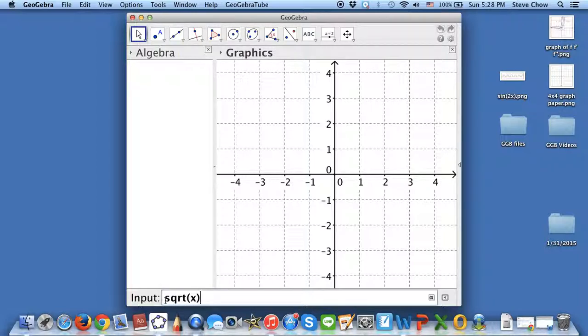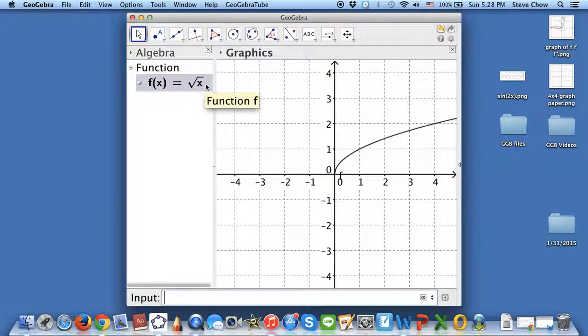And notice that I didn't write down f of x. It doesn't really matter, because if you just press enter, GeoGebra will assign f of x to be square root of x automatically. And notice that we have the square root of x right here, and the little f for the label of the function.